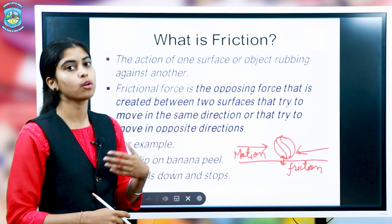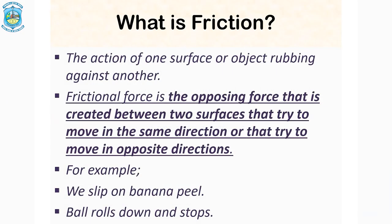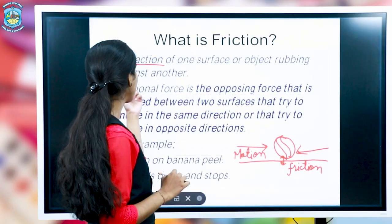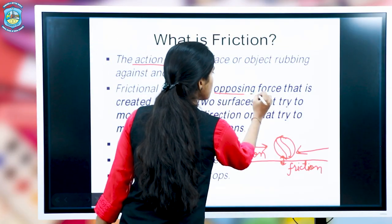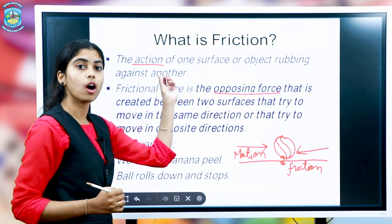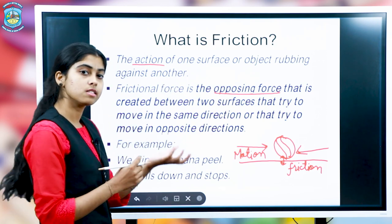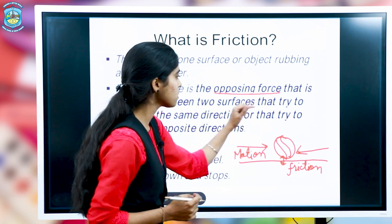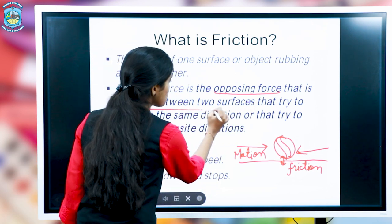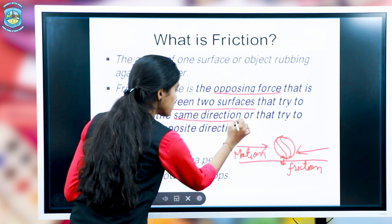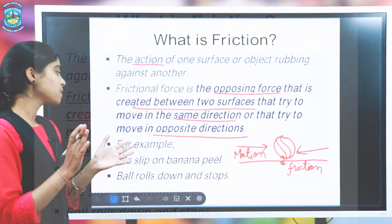Now we will see the definition, then go for examples. Friction is the action of one surface or object rubbing against another. It is a contact force, meaning there is a necessity that two surfaces are touching each other. Frictional force is the opposing force because it opposes and resists the motion of an object, created between two surfaces that try to move in the same direction or in the opposite direction.